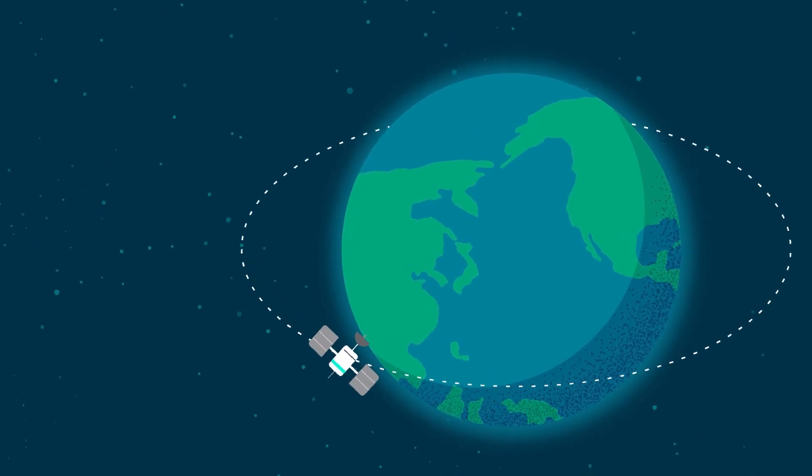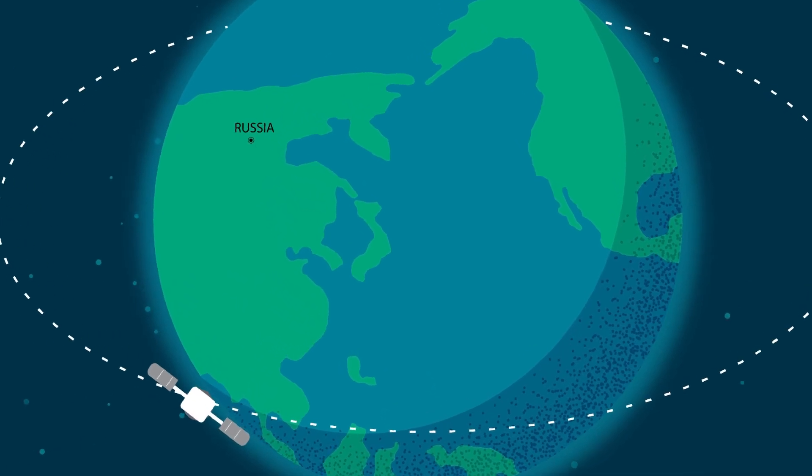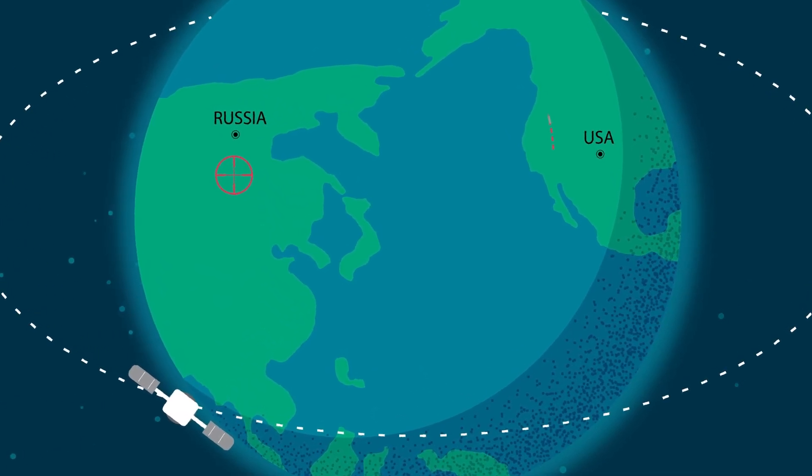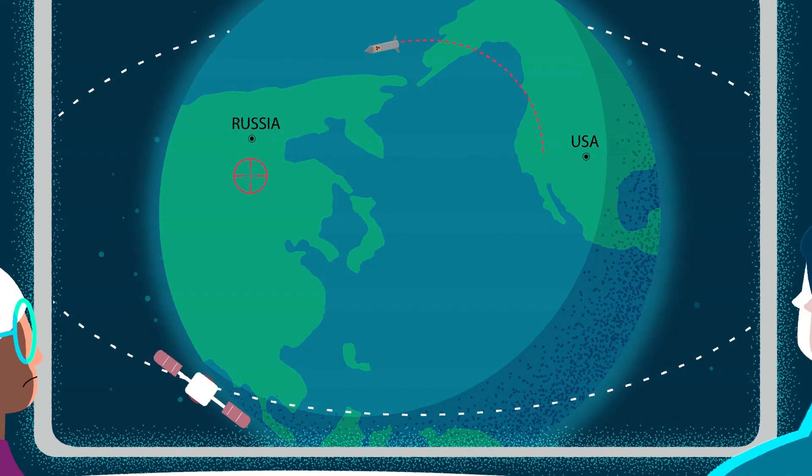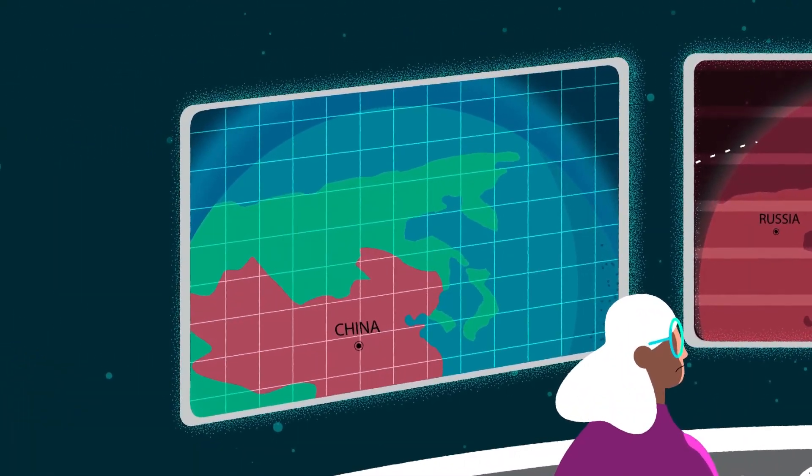National leaders need to be able to communicate in order to use nuclear weapons. Additionally, Russia and the United States have sophisticated early warning systems to detect an incoming nuclear attack. Meanwhile, China is developing such a system.